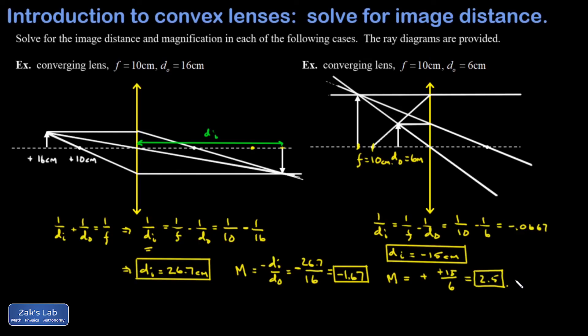As a final note, this second example is exactly what a magnifying glass is. You take a converging lens and place it close enough to the object so that the object is inside the focus, and you see a magnified, upright image of whatever the object is.